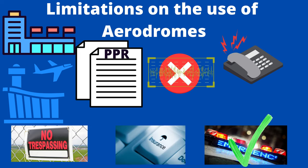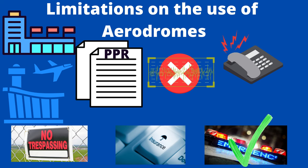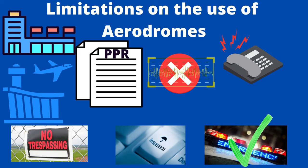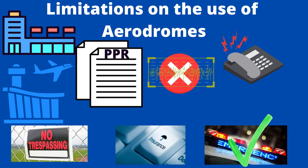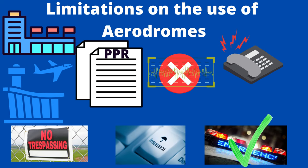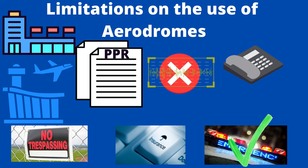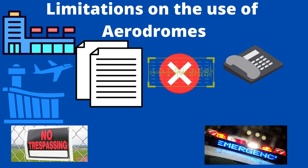You will likely have to demonstrate a higher level of insurance cover to land at a military aerodrome. The civil use of a military aerodrome is restricted to the normal hours of watch and to aircraft on inland flights. At some military aerodromes, civil use is further restricted to certain classes of traffic — for example, scheduled services, charter flights, or private aircraft. The above restrictions on aerodrome use would not apply in the case of an in-flight emergency.